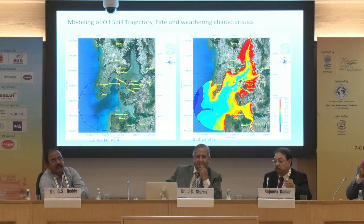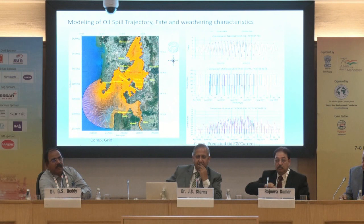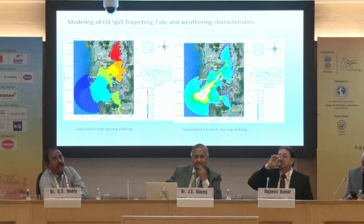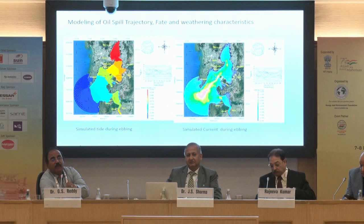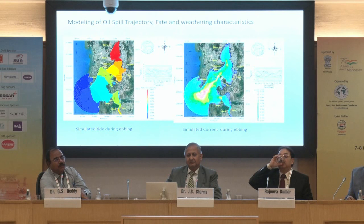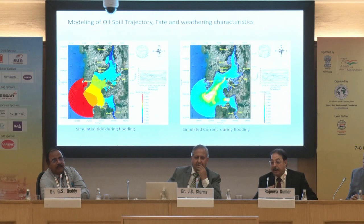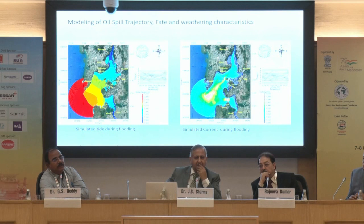This is the bathymetry for the Thane Creek area. This is the finite element mesh. As I mentioned, the model has to be calibrated accurately based on observed current and tidal data — this was supplied by MBPT. This is the simulated tide during the ebbing period — showing water level variation. The current speed is 1.2 metres per second. In case of a spill during ebbing tide, it goes to the ocean side. If it goes during flooding tide, it goes upstream into Thane Creek where there are marine sensitive areas.